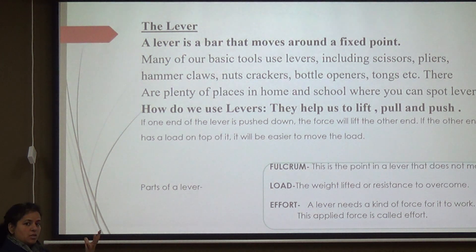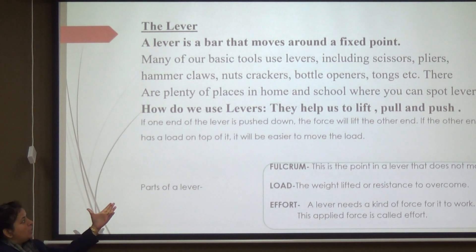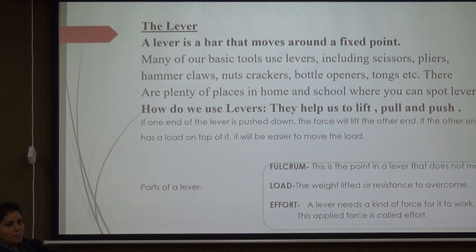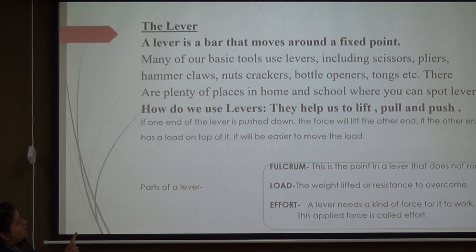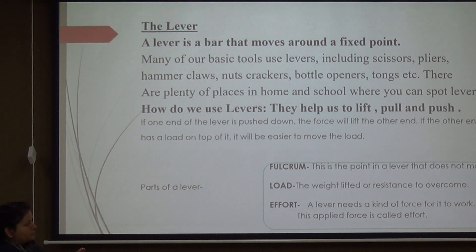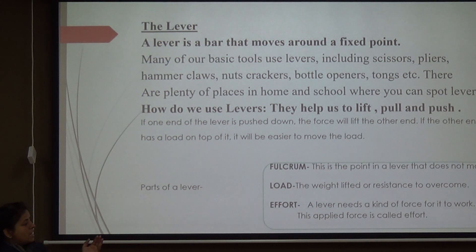Imagine a seesaw: if one end of the lever is pushed down, that force will lift the other end. So if you have to move a load to another position, this function of the lever helps us do it easily. The parts of a lever are: the fulcrum, which is the fixed point around which the rigid bar moves; the load, which is the weight we lift or the resistance to overcome; and the effort, which is the force we apply for the work to be done.